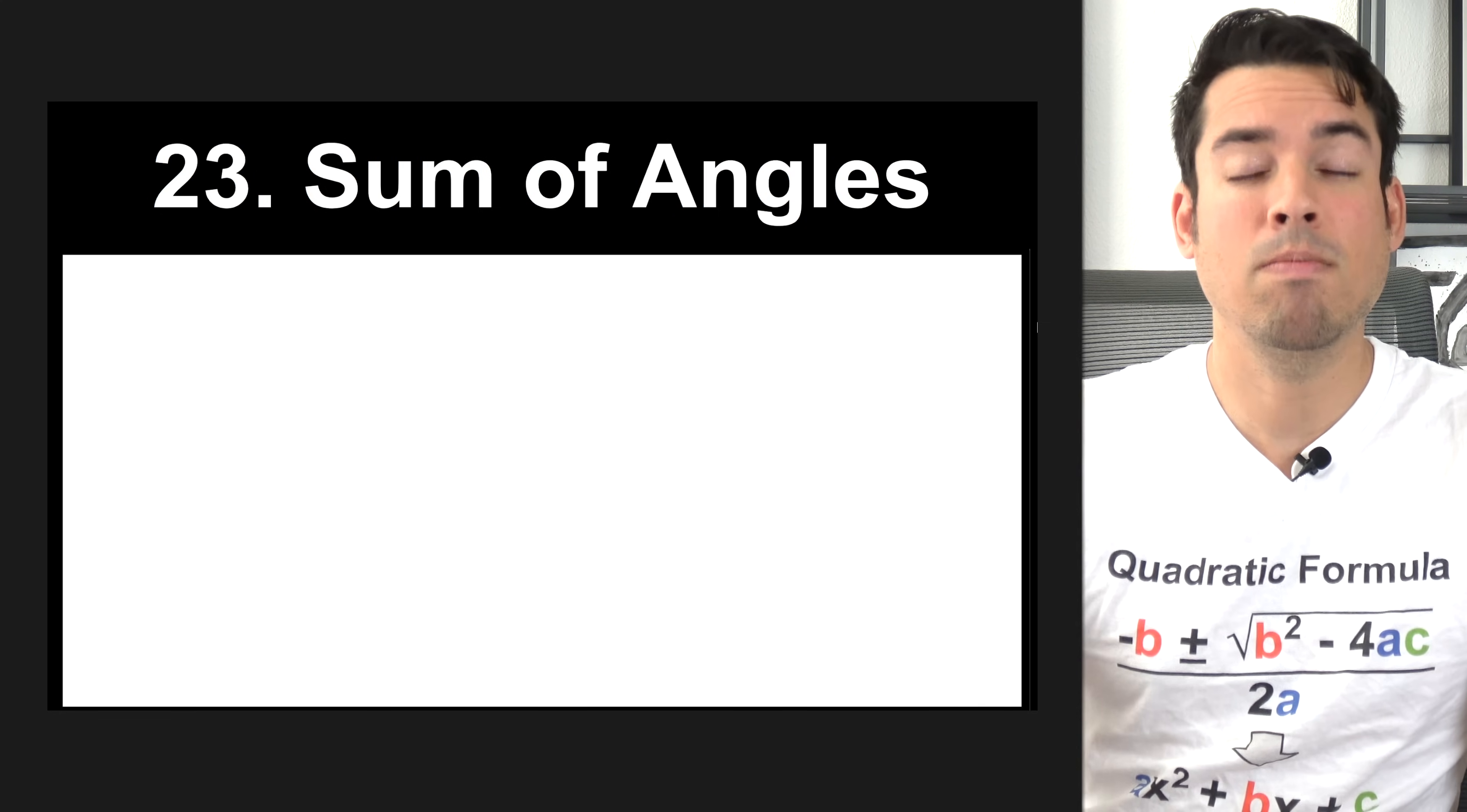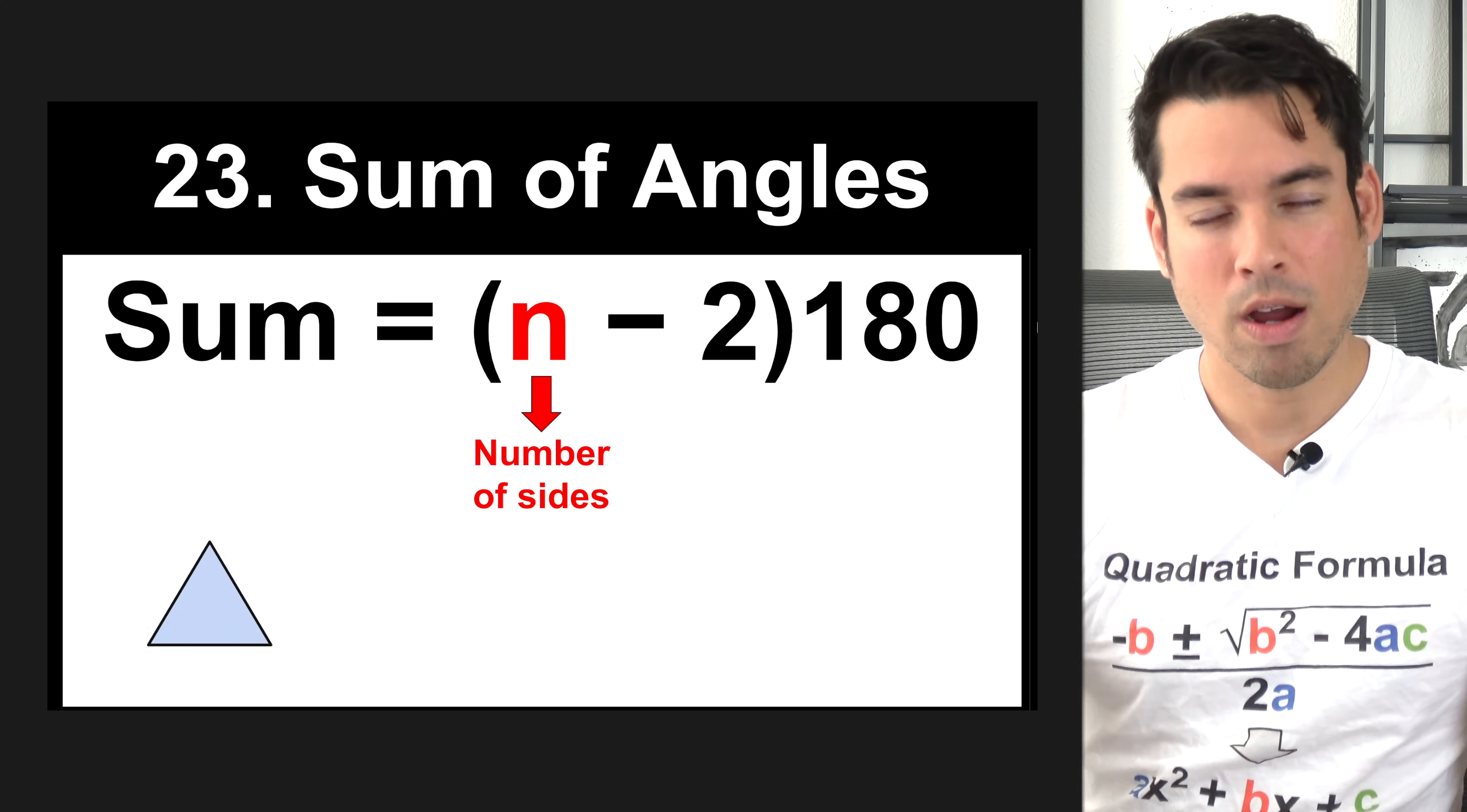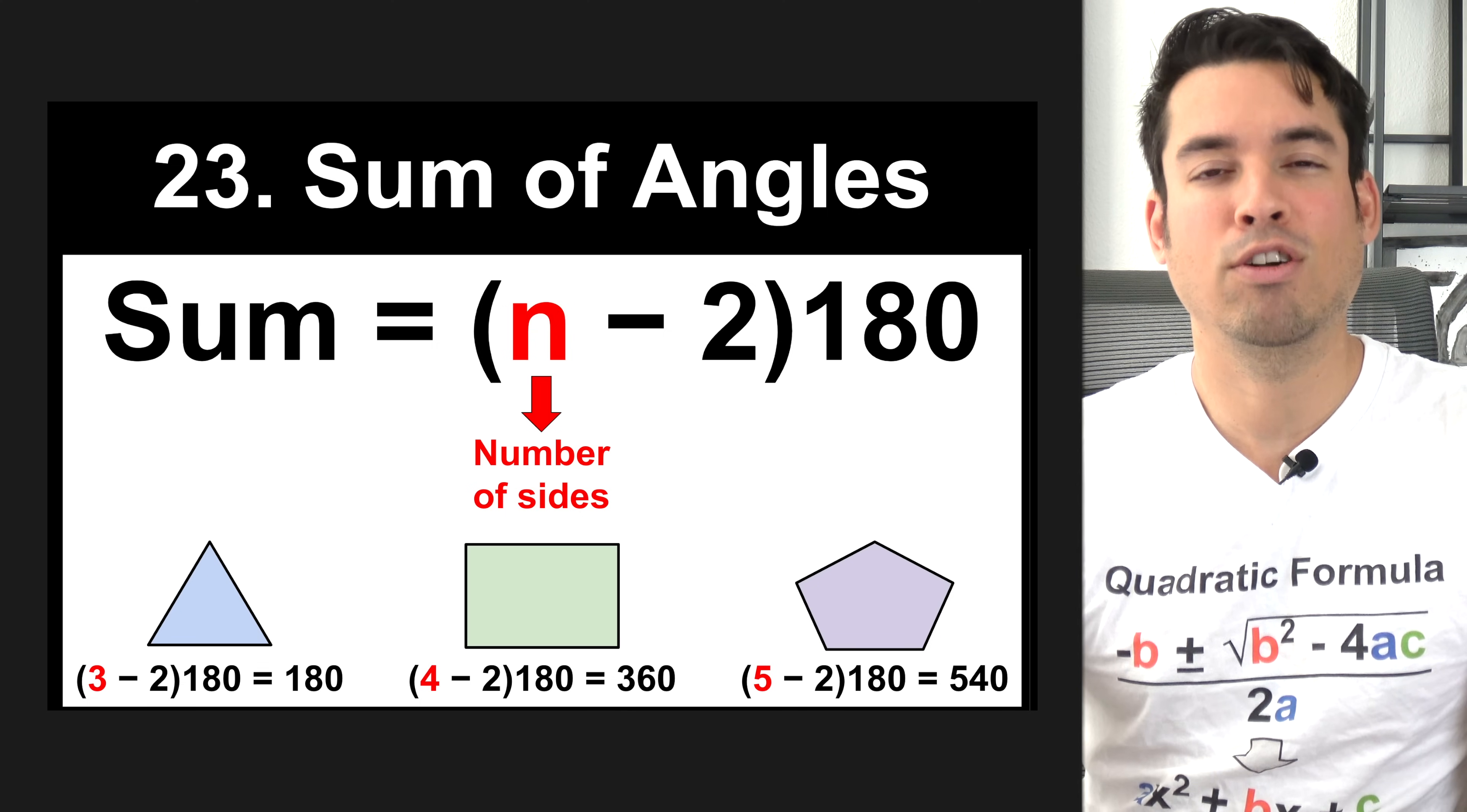Finally, we have the formula for the sum of interior angles of a polygon. The formula is the sum equals n minus 2 times 180, in degrees. n represents the number of sides of the polygon. For example, for a triangle, you would plug in 3 and you would get 180. For a quadrilateral, you would plug in 4 and get 360. And for a pentagon, you would plug in 5 and get 540.